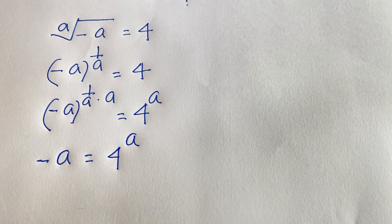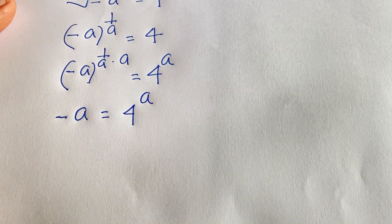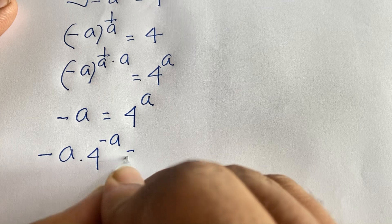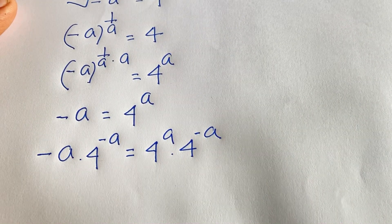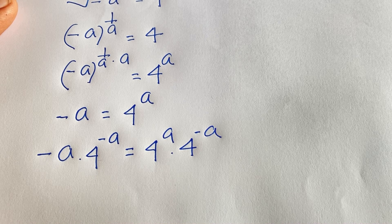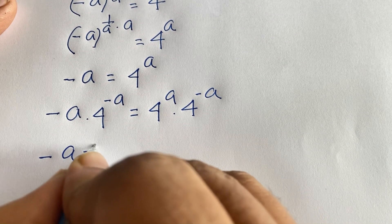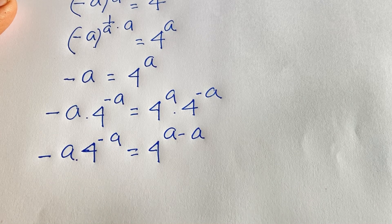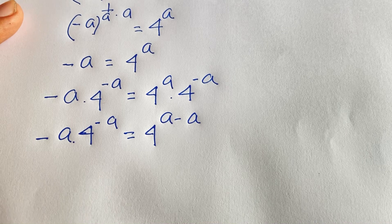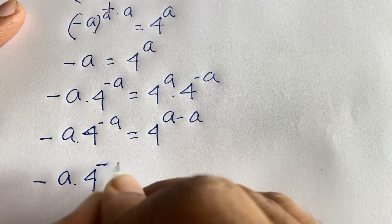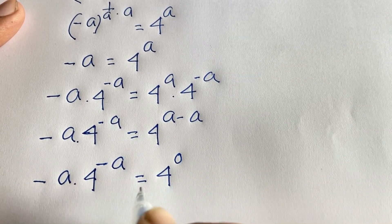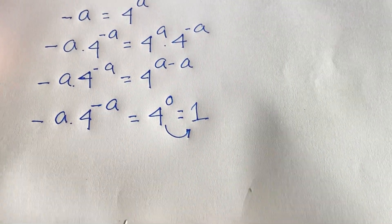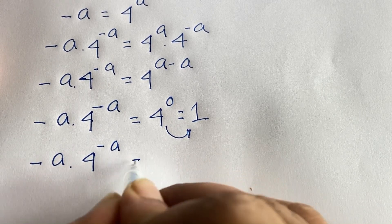Now I multiply both sides by 4 to the power minus a. This gives minus a times 4 to the power minus a equals 4 to the power a times 4 to the power minus a. Using exponential rules, the right side becomes 4 to the power a minus a, which equals 4 to the power 0, which equals 1. So we have minus a times 4 to the power minus a equals 1.